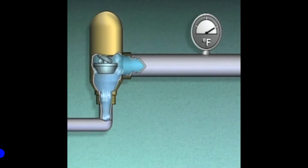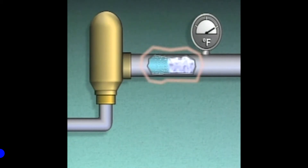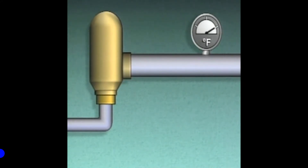This drop in pressure also causes the temperature of the refrigerant to drop. As heat transfers to the refrigerant, the refrigerant begins to boil or vaporize. The refrigerant then flows past the thermometer and absorbs heat from the thermometer and the area around it. The temperature indicated on the thermometer decreases as the liquid refrigerant flows by, absorbs heat, and becomes a vapor.